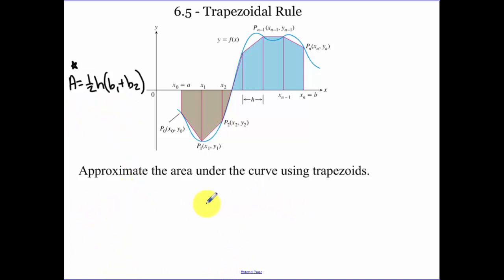Approximate the area under the curve using trapezoids. We're getting to why the formula is what it is. Let's call the area of that first triangle 1/2 my height times base 1, which is y sub 0 plus y sub 1.